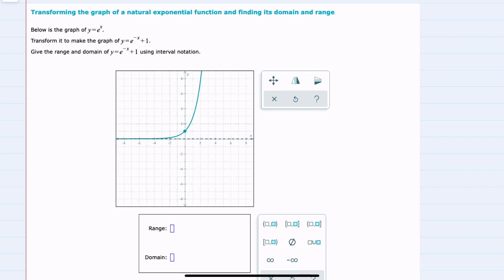We're given the graph here y equals e to the x, and we're asked to transform it to make the graph y equals e to the negative x plus 1.